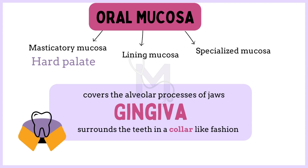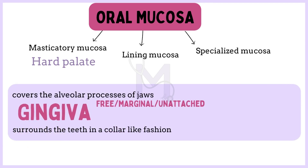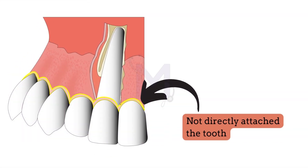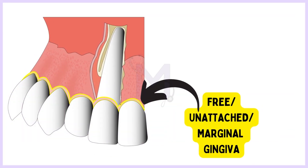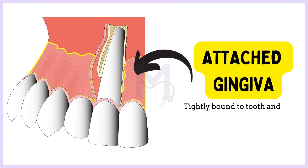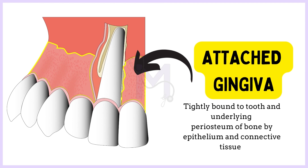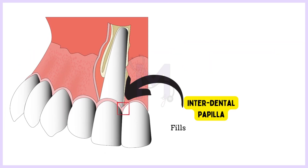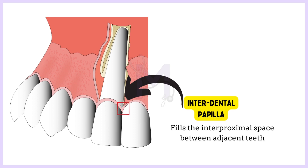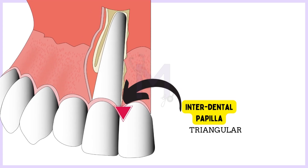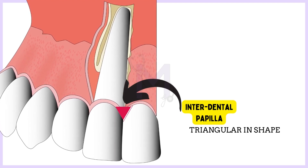Anatomically, gingiva can be divided into three parts: free or marginal gingiva, attached gingiva and the interdental papilla. This portion of the gingiva is not directly attached to the tooth and therefore is called the free, unattached or marginal gingiva. The attached gingiva is tightly bound to the tooth and the underlying periosteum of the bone by epithelium and the connective tissue. Interdental papilla, from the name itself, is the gingiva that fills the interproximal space between the adjacent teeth and is usually triangular in shape.